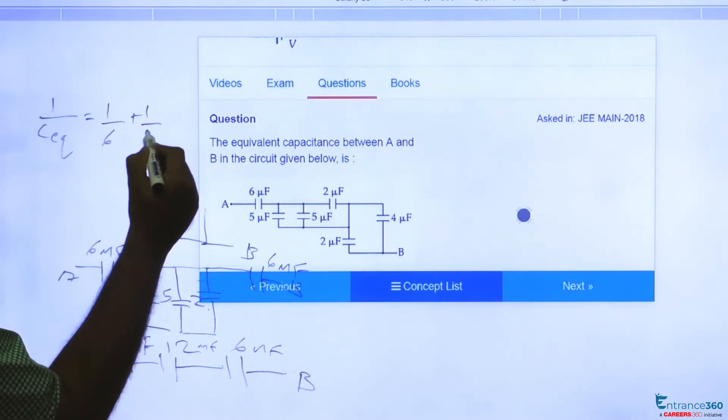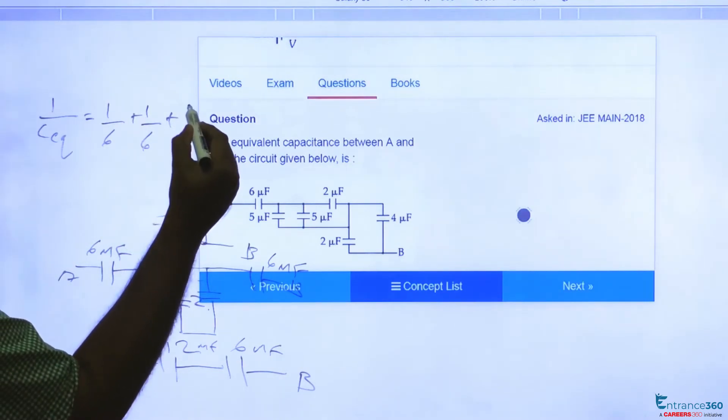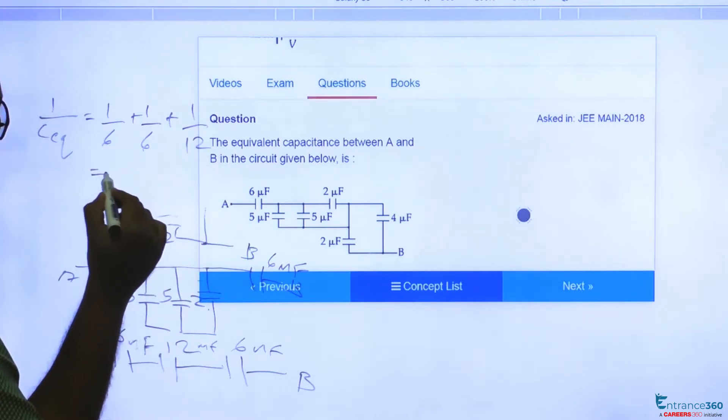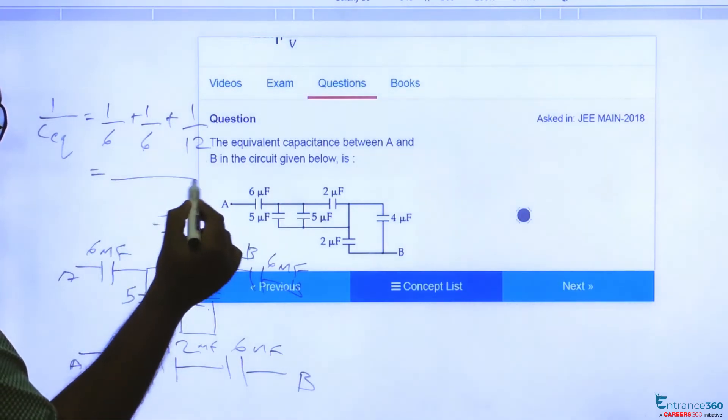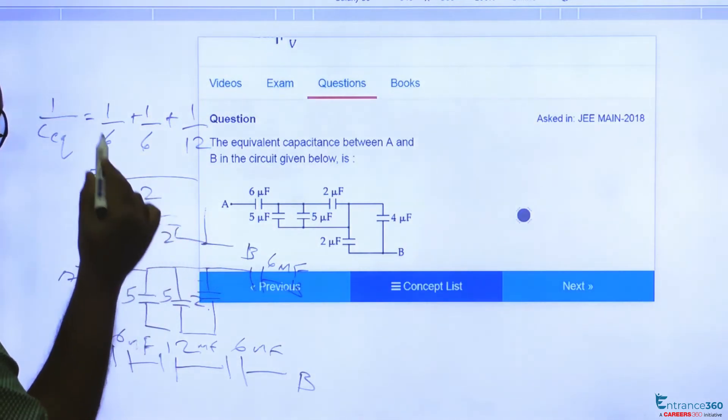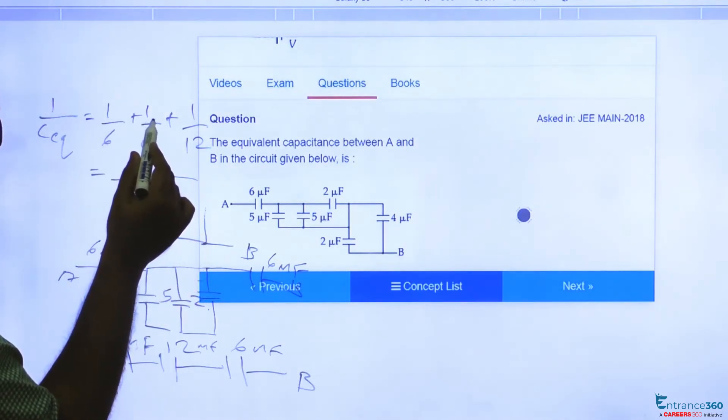Plus 1 by C2 plus 1 by C3, which equals, if you take LCM, 12: 2 plus 2, 4 plus 1, 5.